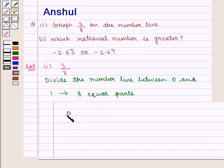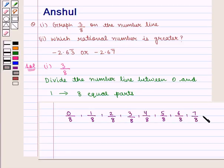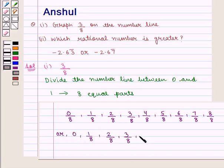That is: 0/8, 1/8, 2/8, 3/8, 4/8, 5/8, 6/8, 7/8, and 8/8. Which can also be written as: 0/8 is 0, then 1/8, 2/8, 3/8, 4/8, 5/8, 6/8, 7/8, and 8/8 is 1.